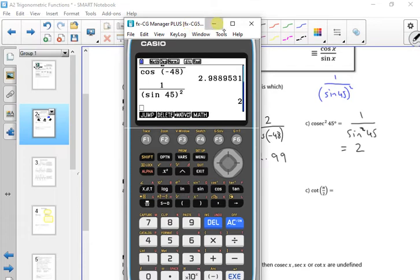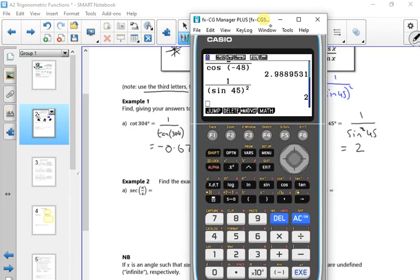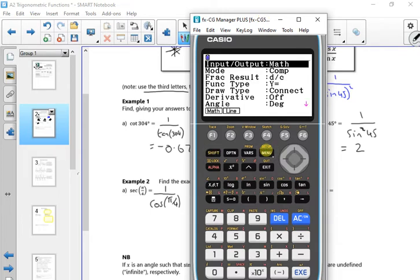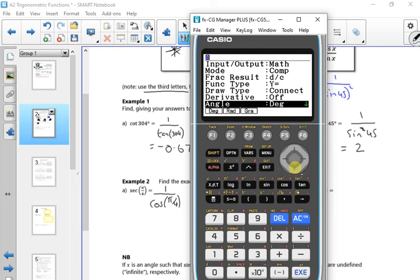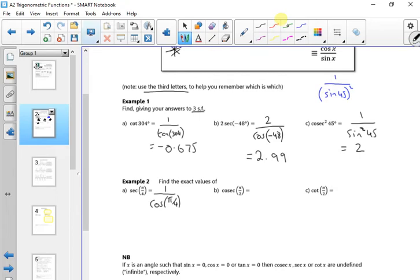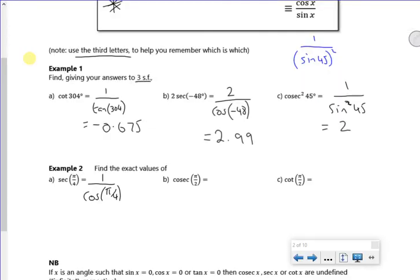We'll do the same thing in radians. So very quickly. Example 2: Find the exact values of a) sec(π/4), b) cosec(π/2), c) cot(5π/2). Will you work them out? You can put them in your calculator.